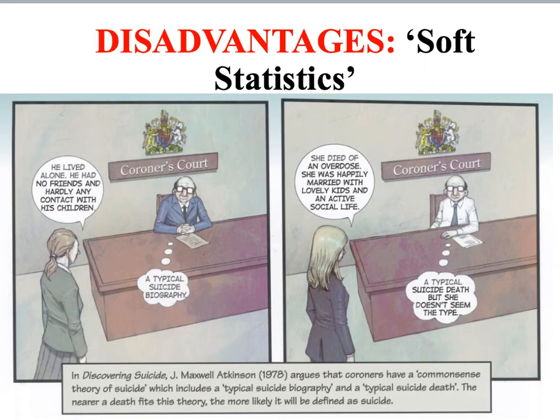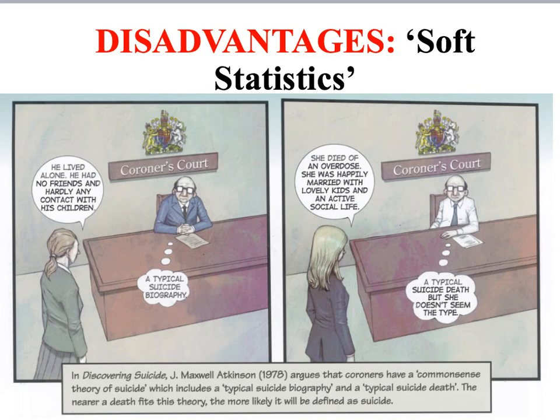Interpretivist sociologists — those who are against the idea that sociology can and should be scientific — would be very critical of many forms of official statistics. They would argue that official statistics only represent how the authorities define things, like crime, but also the example of suicide we've looked at in previous lessons. From an interpretivist point of view, suicide statistics aren't objective measures of how many suicides there are, but simply a measure of how many deaths coroners have defined as a suicide.